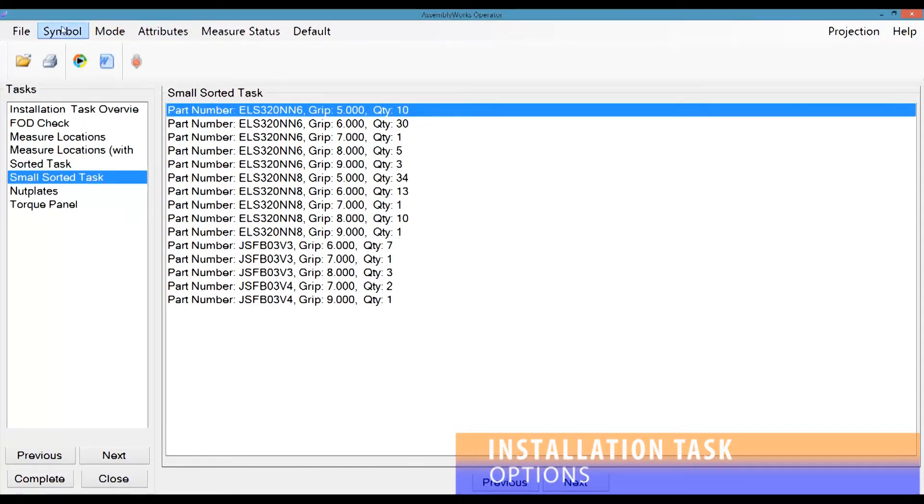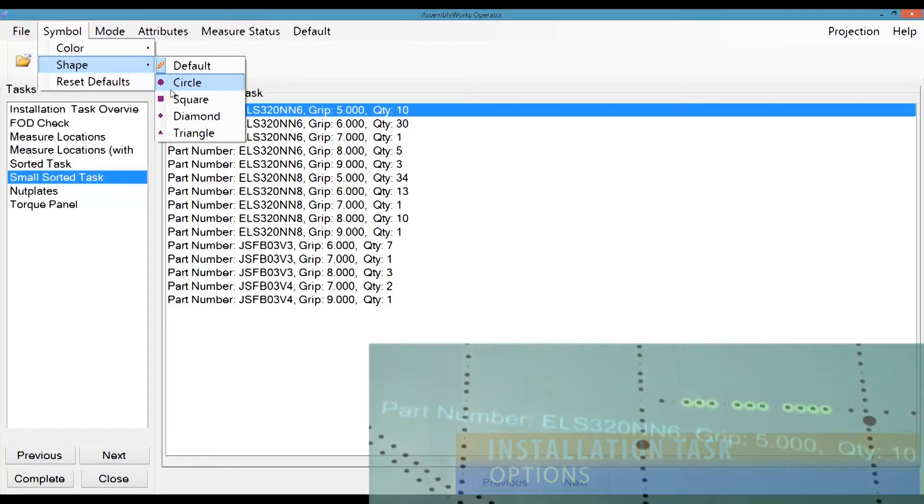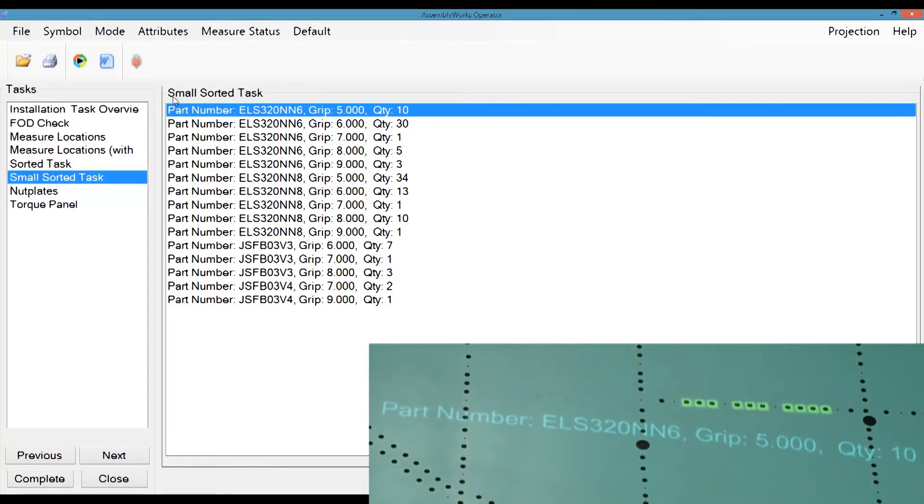In any installation task, the user has the ability to change several options at any time. The first option is symbol properties. This allows the user to change the symbol from the author default to another shape, like circle to square,